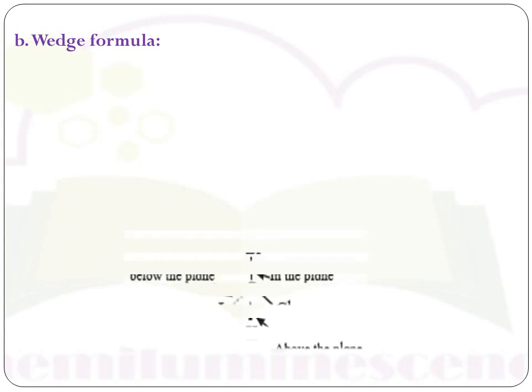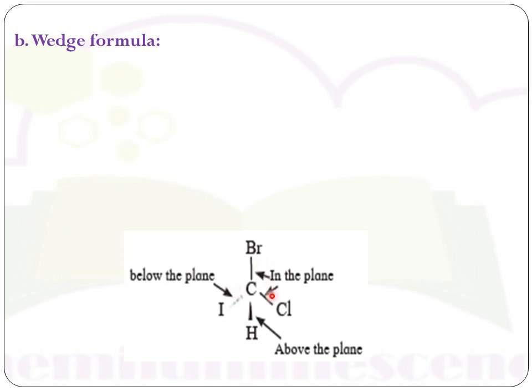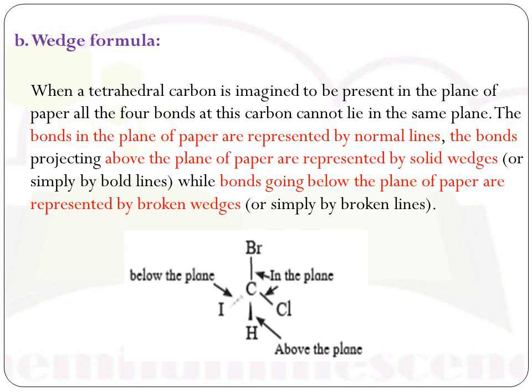The next representation is the wedge formula. When a tetrahedral carbon is imagined in the plane of paper, all four bonds cannot lie on the same plane. In wedge formula, an atom or group of atoms present in the plane of paper is represented by a simple or normal line. The bond present above the plane is represented by a solid wedge or bold line, while the bond present below the plane is shown by a broken wedge or broken line. This is how a tetrahedral molecule is represented in wedge formula.